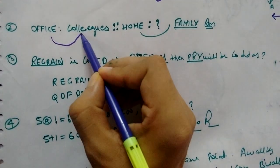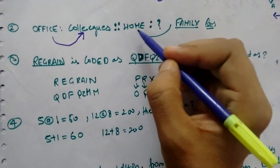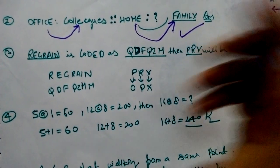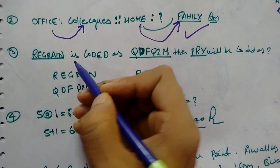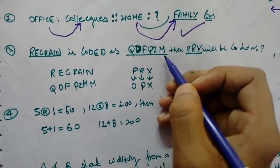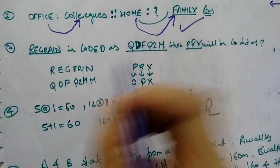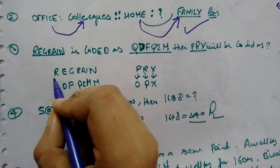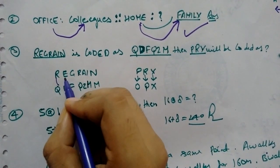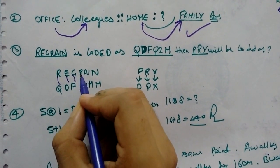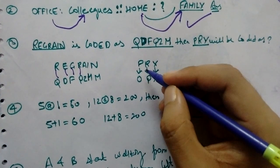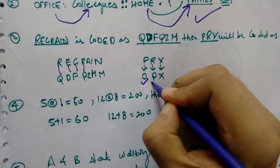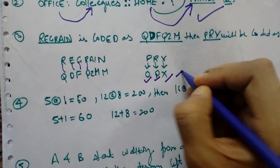Office is to colleagues, home is to family question. REGRAIN is coded as QDFQ2M then PRY will be coded as, if you will see this will be less, less P. That will be answer.